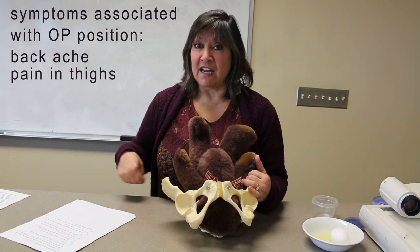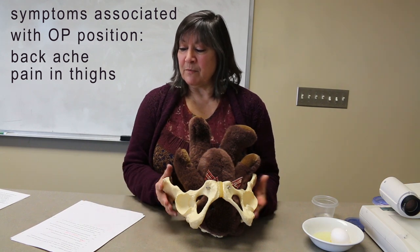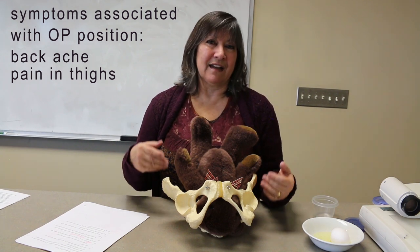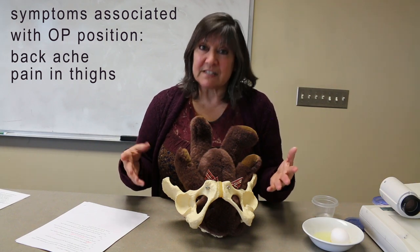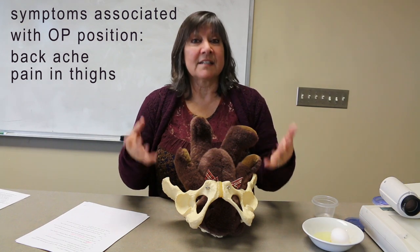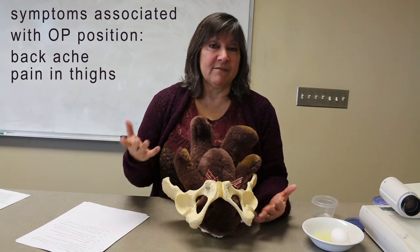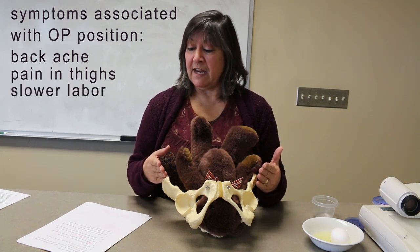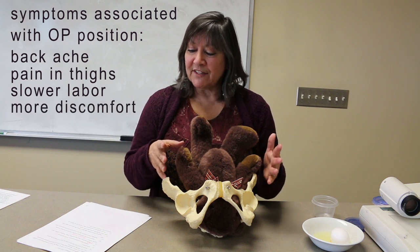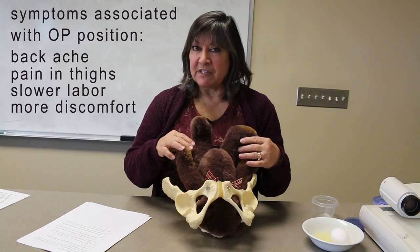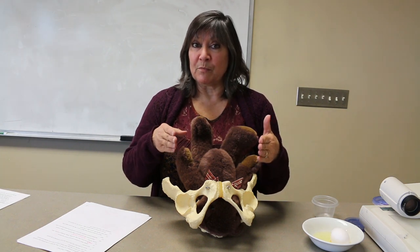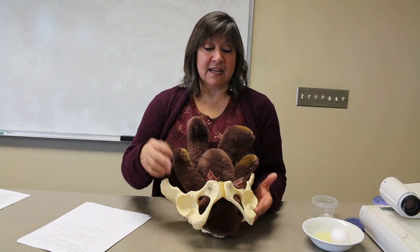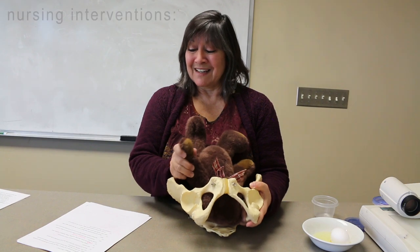Why do we even bother talking about this? It's because OP is not a position that is good for labor. It's a common position because the baby is maneuvering the pelvis and sometimes lands this way — sometimes it doesn't finish rotating all the way. It usually gives us a longer labor and more back or leg pain. The baby isn't maneuvering the pelvis quite the way we usually want. This might be temporary, but sometimes it stays. The reason for the pain is the occiput pressing on her sacrum. So what does a nurse do about that?